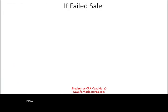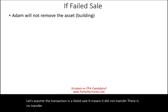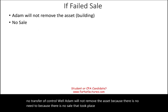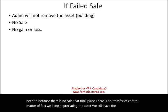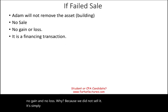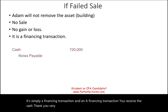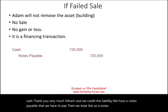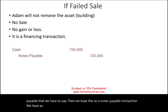Now let's assume the transaction is a failed sale — meaning there was no transfer of control. Adam will not remove the asset because no sale took place. We keep depreciating the asset, and there is no gain and no loss because we did not sell it. It's simply a financing transaction: you receive the cash and credit a notes payable liability. We treat this as a notes payable transaction with an amortization schedule based on the interest rate, with payments split between interest and principal.